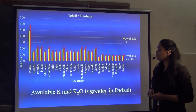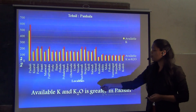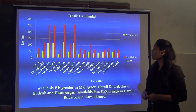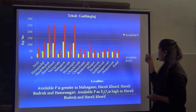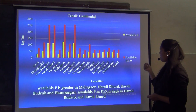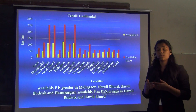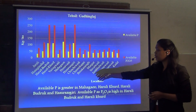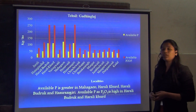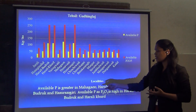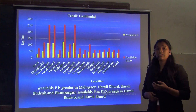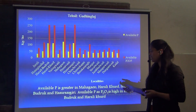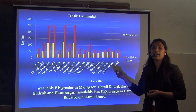From the Parmara region, the available Potassium and Potassium Oxide is greater in Persar. From Gadianglas Tessit, the available Phosphorus and Phosphorus as Phosphorus Pentaoxide — the available Phosphorus is greater in Mahaga, Harlikurt, Harlikudrup and Hasursasgiri, where the available Phosphorus as Phosphorus Pentaoxide is higher in Harlikudrup and Harlikurt.